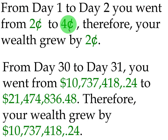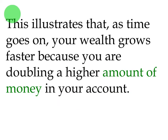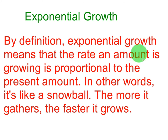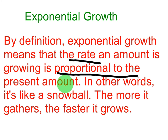From day one to day two, you went from two cents to four cents, so your wealth grew by two cents. But from day 30 to 31, you went from $10 million to over $21 million — your wealth grew by over $10 million. This illustrates that as time goes on, your wealth grows faster because you are doubling a higher amount. This gets at the heart of exponential growth: by definition, exponential growth means that the rate an amount is growing is proportional to the present amount.